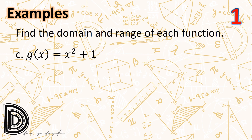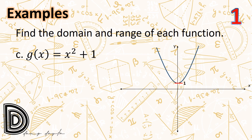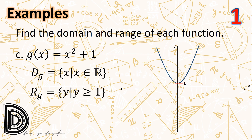Next, we have g(x) = x² + 1. Consider the graph of the function g. Since the graph extends infinitely in the upward direction, the domain is the set of all x such that x is an element of the real numbers. The graph of g is a parabola opening upward with vertex at (0, 1), and there are no points with a y-coordinate less than 1. Thus the range is the set of all y such that y ≥ 1.